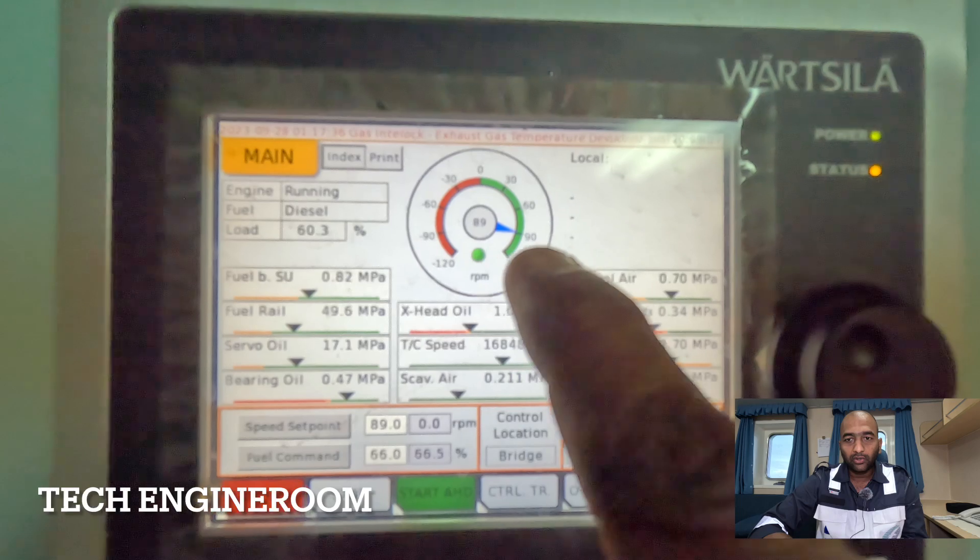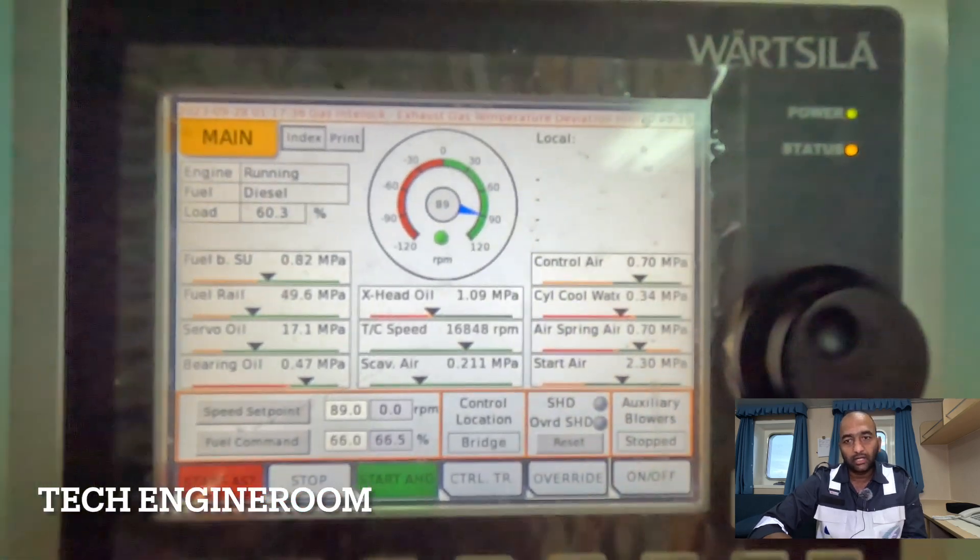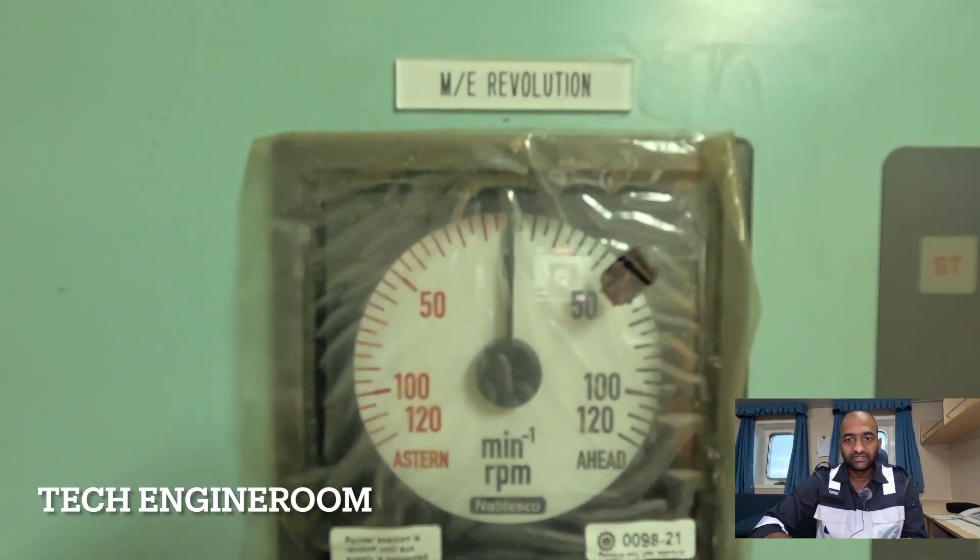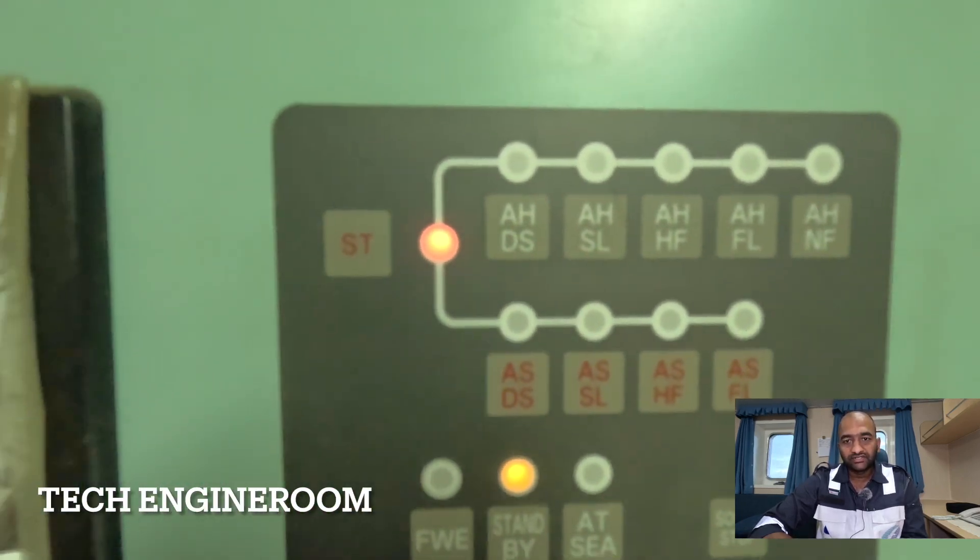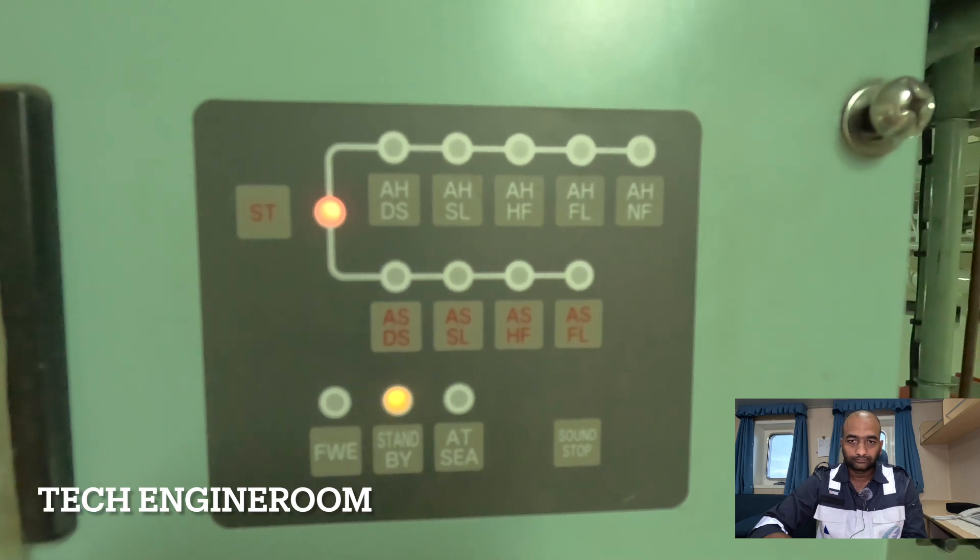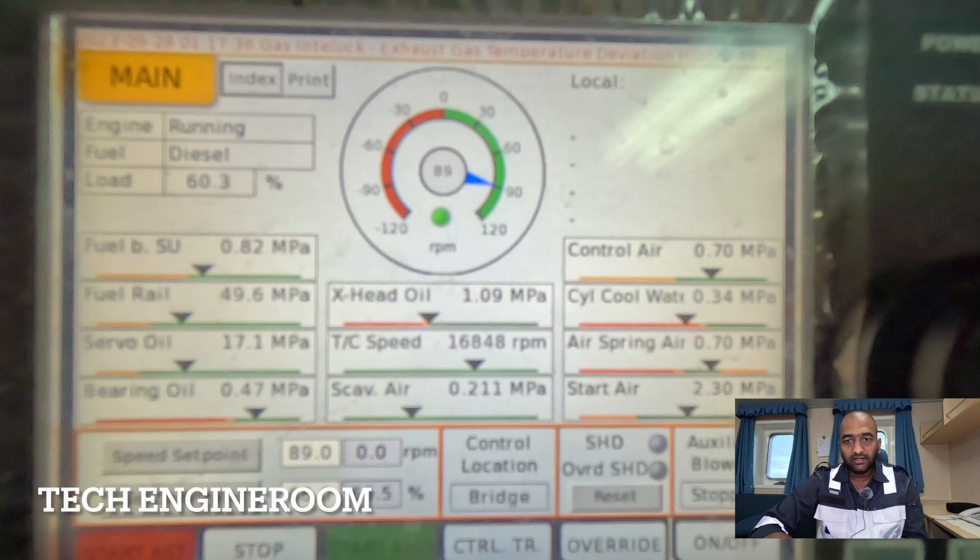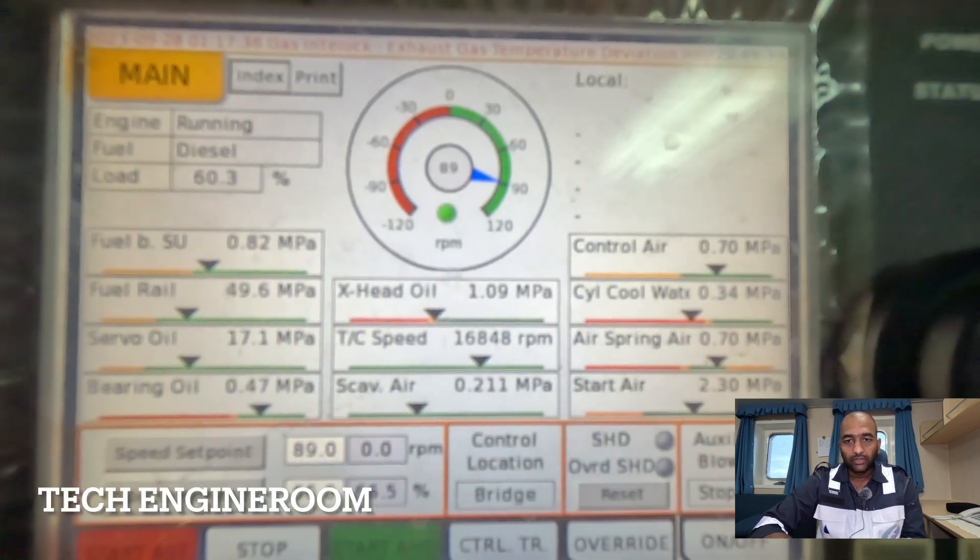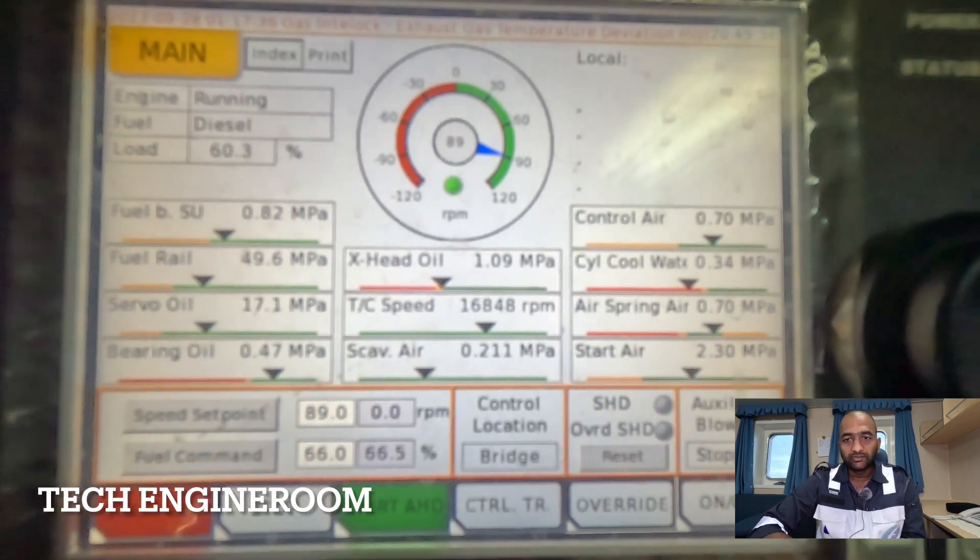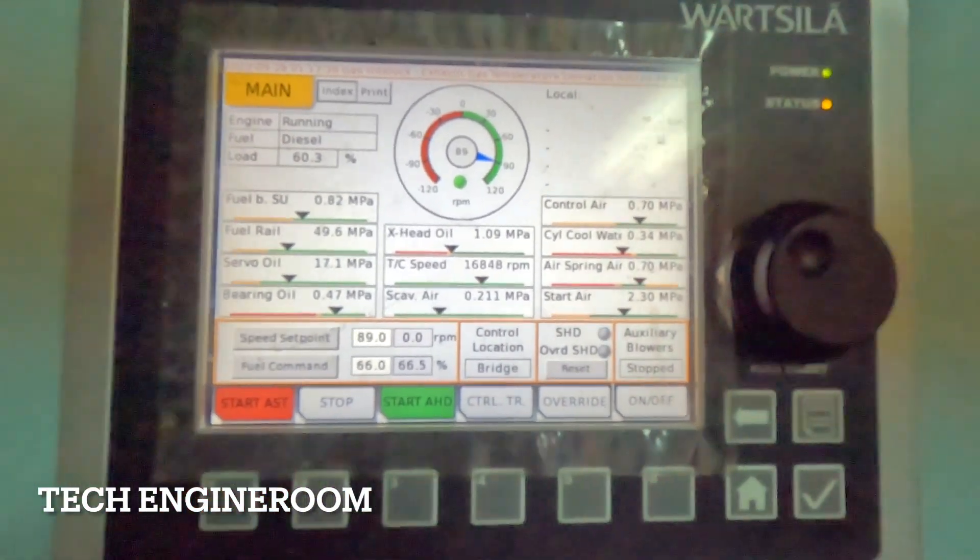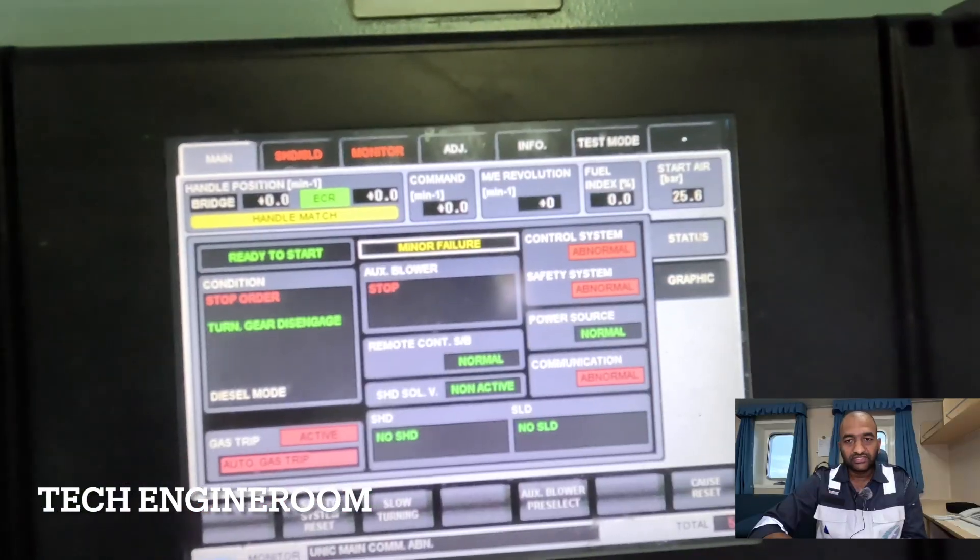Hello engineers, you can see my local LDU panel. All the values have been frozen, so even though the main engine was stopped, it is in zero RPM and engine is in stop mode. This is my RPM indicator which is showing 89, and all the values have been frozen in the LDU.